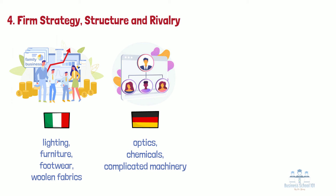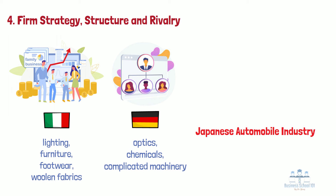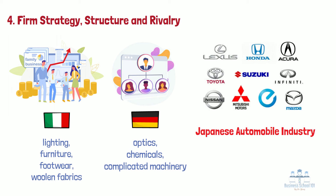Moreover, domestic rivalry is instrumental to international competitiveness since it forces companies to develop unique and sustainable strengths and capabilities. The more intense domestic rivalry is, the more companies are being pushed to innovate and improve in order to maintain their competitive advantage. In the end, this will only help companies when entering the international arena. A good example of this is the Japanese automobile industry, with intense rivalry between players such as Nissan, Honda, Toyota, Suzuki, Mitsubishi, and Subaru. Because of their own fierce domestic competition, they have become able to more easily compete in foreign markets as well.